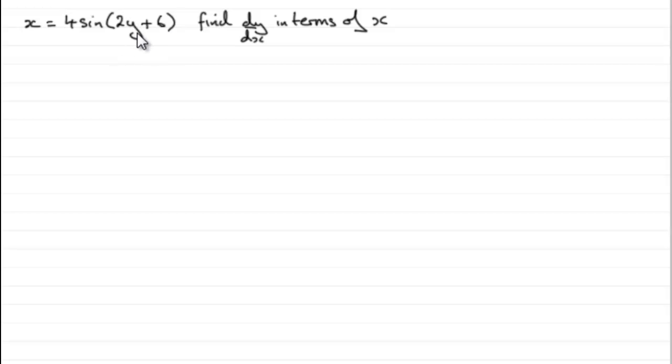Now I don't want to rearrange this to make y the subject. It's going to be too awkward. What I'm going to do is find dx by dy first of all, because once I've found dx by dy I can call upon this principle which we should already know. We should already know that dy by dx is equal to 1 divided by dx dy. So if I find dx by dy I should be able to get dy by dx.